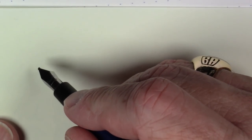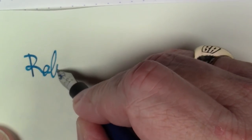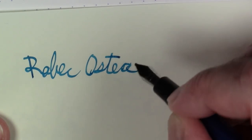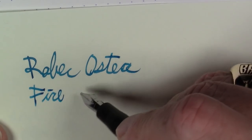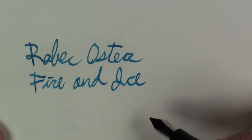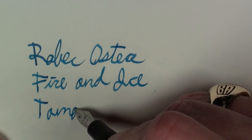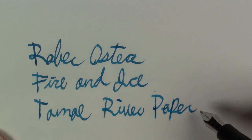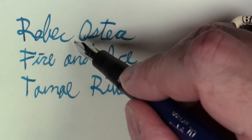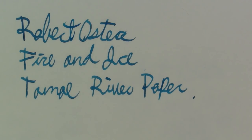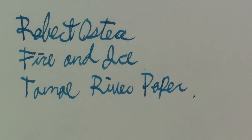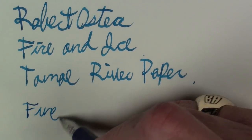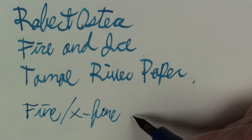So this is Robert Oster Fire and Ice. This is on Tomoe River paper. And let's see how that does with the fine point as well. So that's with the oblique, and this is with the fine slash extra fine nib.